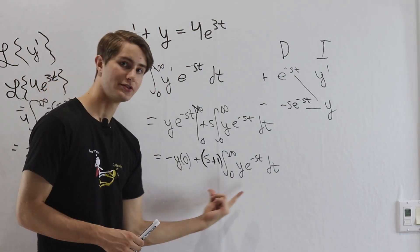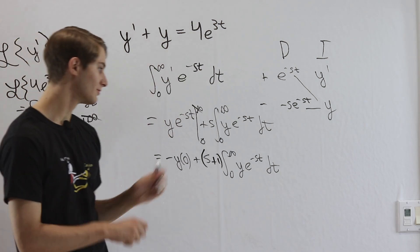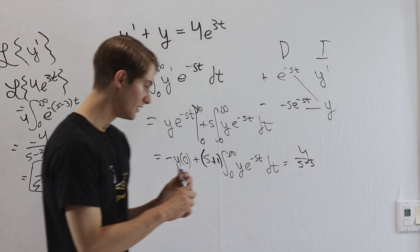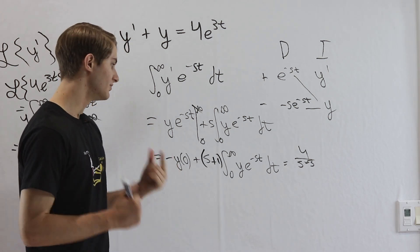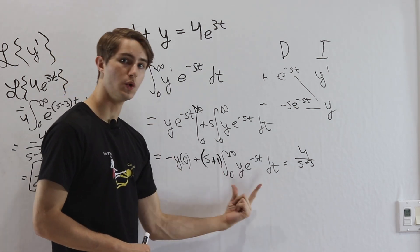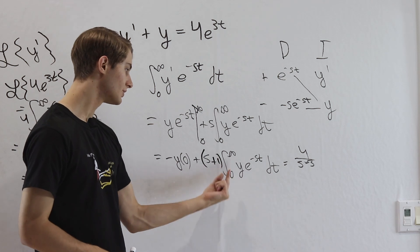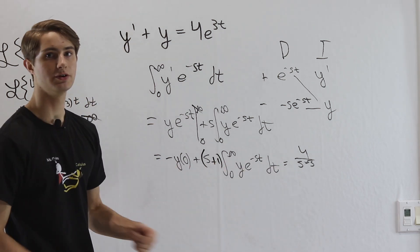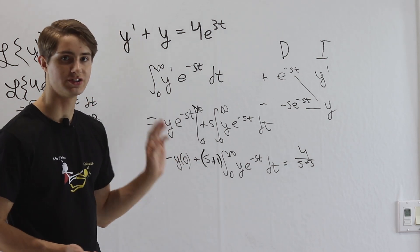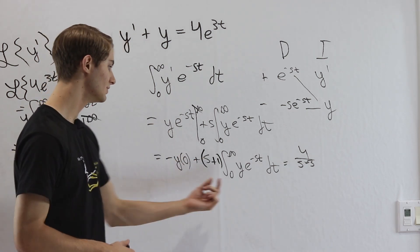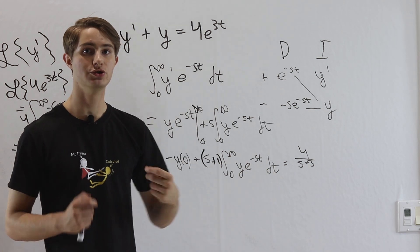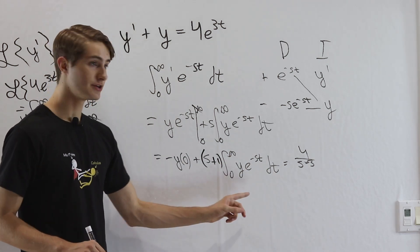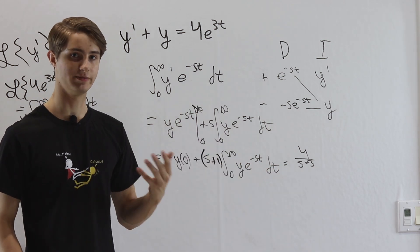We can go back to our equation and write the Laplace transform of the right side as 4/(s-3). Notice what we've done: we have only one thing in terms of y — the integral of y·e^(-st). Everything else is a number: y(0) is a number, s is a number. So this is just an algebra problem. All we have to do is solve for this integral, and then we can go backwards to the original function. I'll skip the algebra and write down the answer we get.